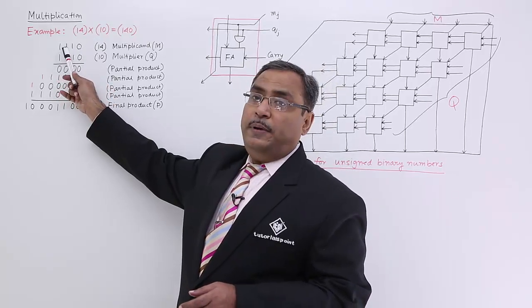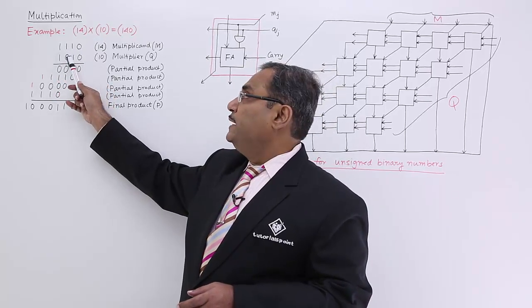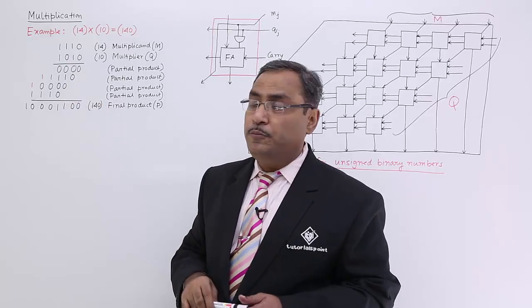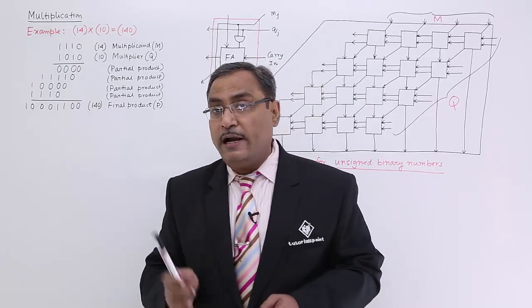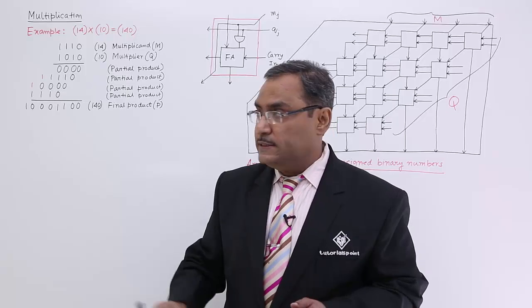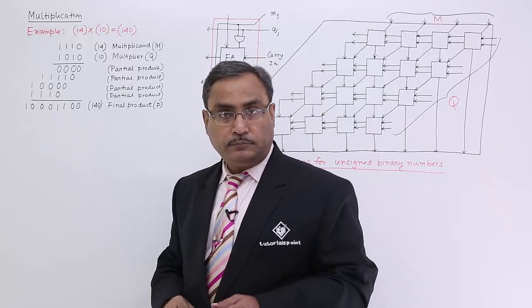How many bits are there in the multiplicand? 4 bits. How many bits are there in the multiplier? 4 bits. How many bits are there in the final product? 8 bits. Remember it's 8 bits.